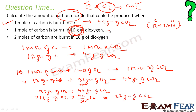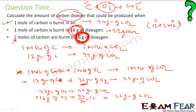For the third case, 2 moles of carbon are burnt with 16 grams of di-oxygen. Here also, oxygen is less — it is still the limiting reagent. Since the result depends only on oxygen, 16 grams of oxygen will always form 22 grams of CO₂, so you get the same answer as the second case.